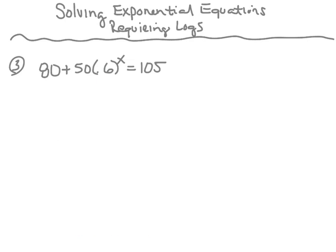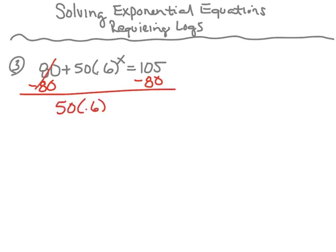Number three, we have the exponential 80 plus 50 times 0.6 to the x power is equal to 105. The first thing we're going to do is isolate the base and the exponent. We're going to start by subtracting 80 from both sides. So now I have 50 times 0.6 to the x power is equal to 105 minus 80, which is 25.